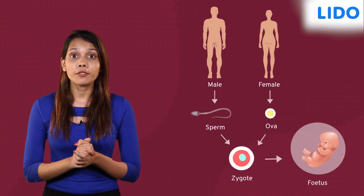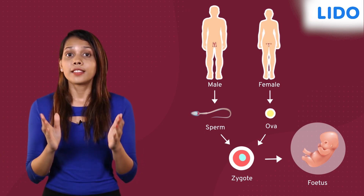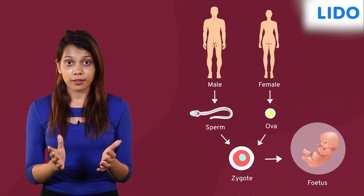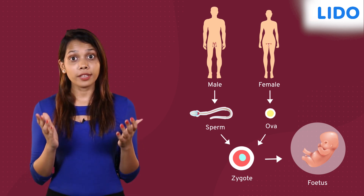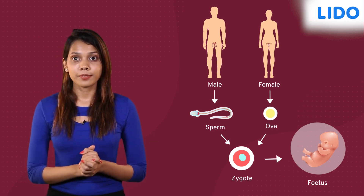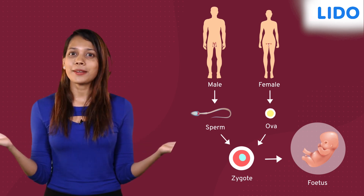All of us are formed through this process — fascinating, isn't it? During fertilization, the fusion of male and female gametes takes place. The nucleus of the sperm carries the genetic material from the father and fuses with the nucleus of the egg which contains the genetic material from the mother. And this is how we get some features of both our parents.